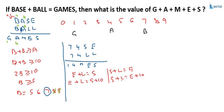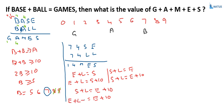Taking trial and error on these equations — suppose we take S plus L equals E plus 10. Since S equals E plus L from the first case, substituting gives E plus L plus L equals E plus 10, so E cancels and 2L equals 10, giving L equals 5. So 5 is allocated to L.